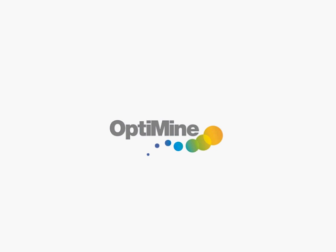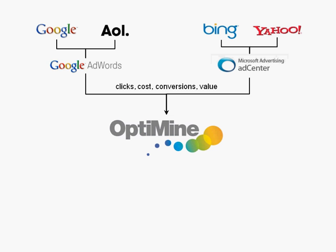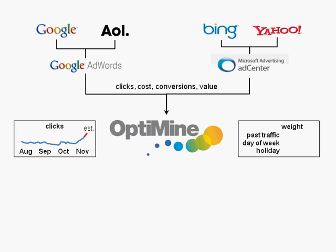How does it work? We synchronize with your Google AdWords and Microsoft AdCenter accounts to get clicks, cost, conversion, and value data for each keyword each day. Based on that data, we generate multivariate predictive models for each keyword that allow us to estimate how a keyword will perform tomorrow at different positions. The models take into account many factors like last week's traffic, day of week, and days until the next holiday.